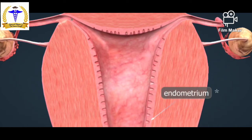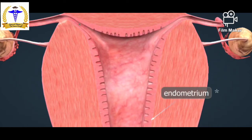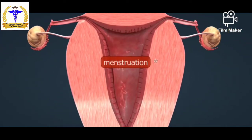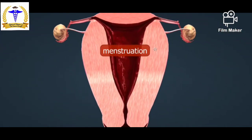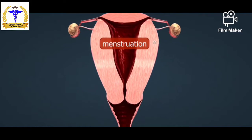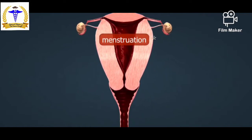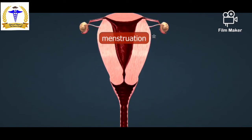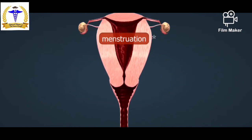If fertilization does not take place, the endometrium dies and is sloughed off by menstrual bleeding. Menstruation usually lasts 4 to 6 days, and approximately 30 to 50 ml of blood is discharged on average.